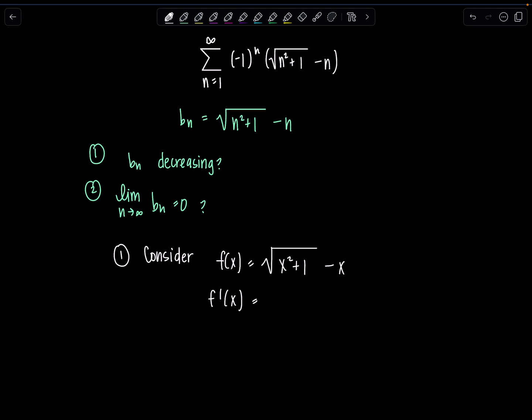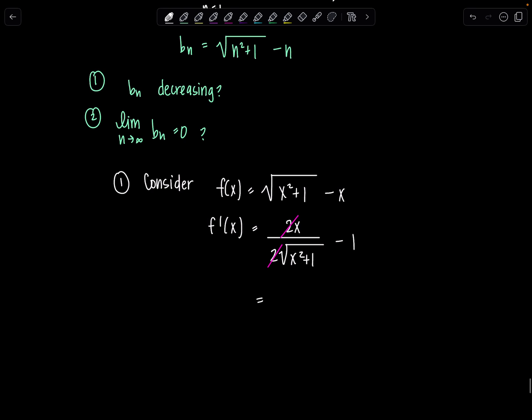Let me look at what the derivative would be. f prime of x. Derivative of square root of x squared plus 1, we have to do the chain rule. Little shortcut: you put 2, the original radical in the denominator, and then derivative of the inside in the numerator, minus derivative of x is 1. These two's cancel out, and my derivative is just x over rad x squared plus 1 minus 1.